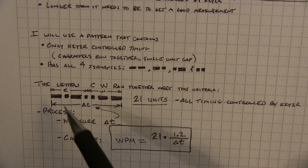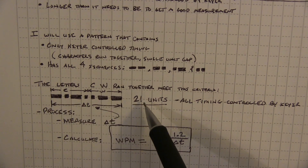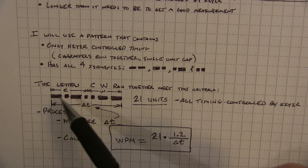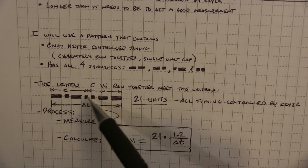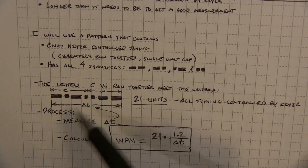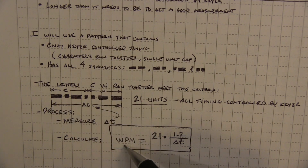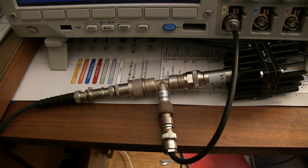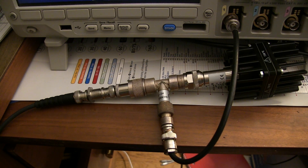Counting up all the unit times, that's 21 unit times. So all I'll do is measure with the oscilloscope how long it takes to send this sequence of elements and measure this delta-T. Then I can calculate words per minute by taking 1.2 divided by delta-T and multiplying it by 21. I'm going to do this by directly measuring the RF output of the transceiver, though I could also probe the speaker and listen to the side tone.